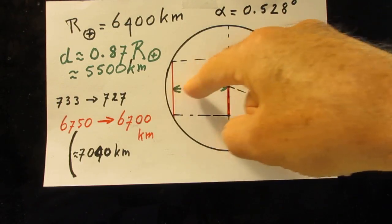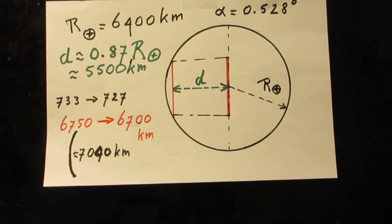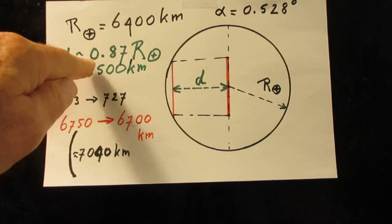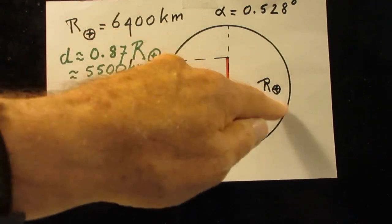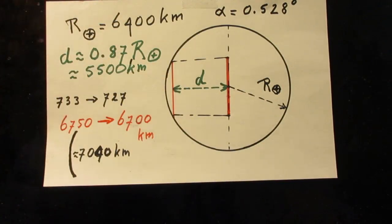The distance d, I calculated, this is to scale, you can do the same. The distance d here is roughly 87% of the radius. And so the distance d is about 5500 kilometers.